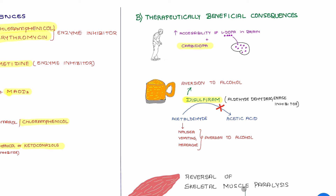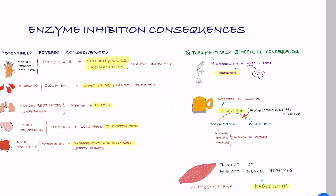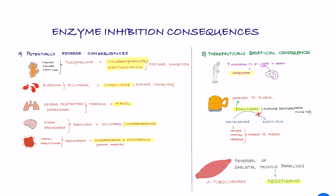Next, the third beneficial consequence of enzyme inhibition is the reversal of skeletal muscle paralysis. If you are using d-tubocurarine — a skeletal muscle relaxant used during operations — to reverse the skeletal muscle paralysis caused by d-tubocurarine, we use neostigmine, which is an acetylcholinesterase inhibitor. Neostigmine increases the concentration of acetylcholine, which is required for the breakdown of d-tubocurarine. This was about the beneficial consequences of enzyme inhibitors.